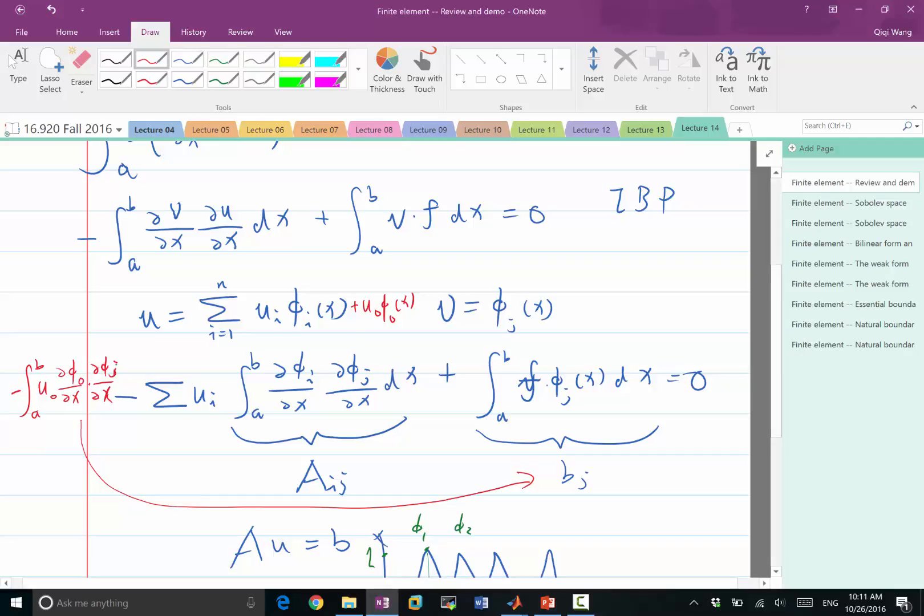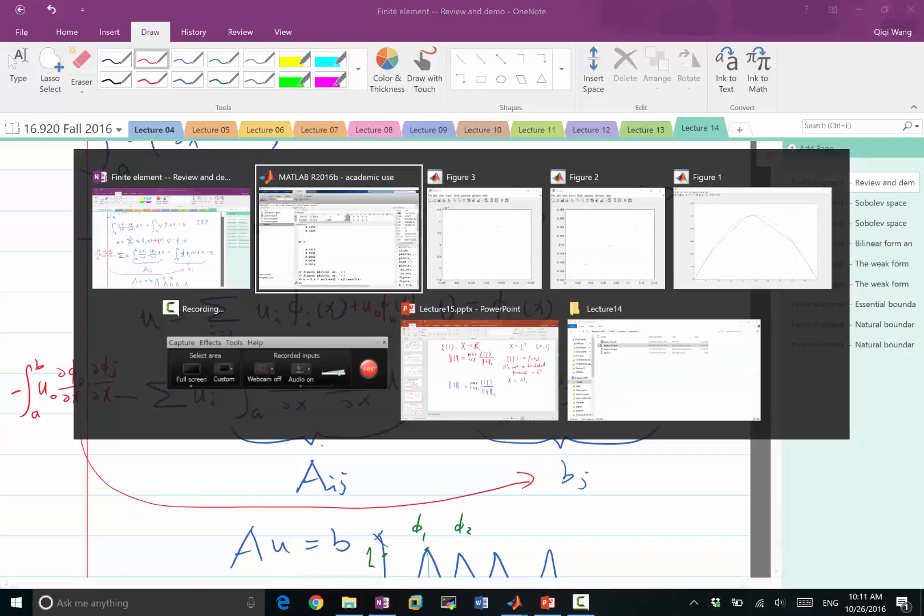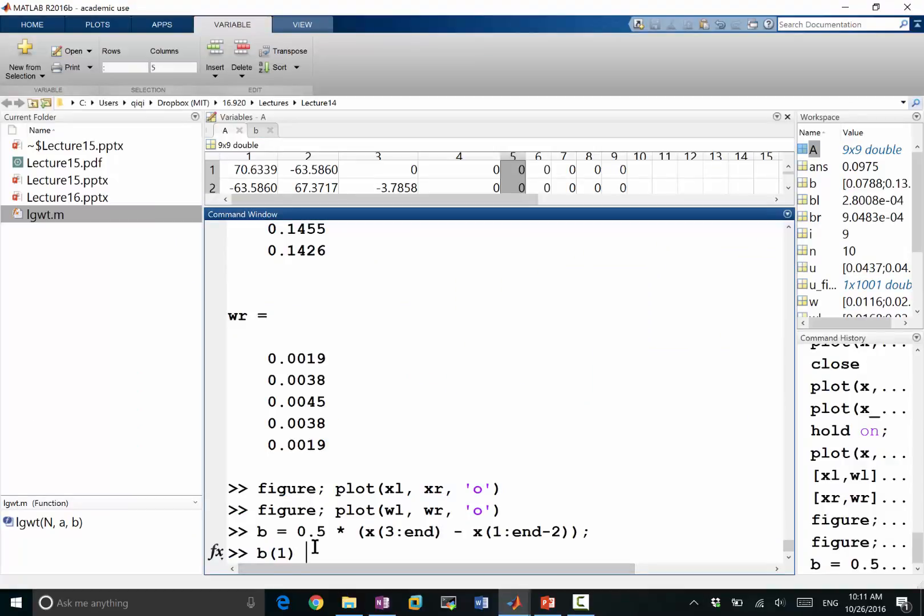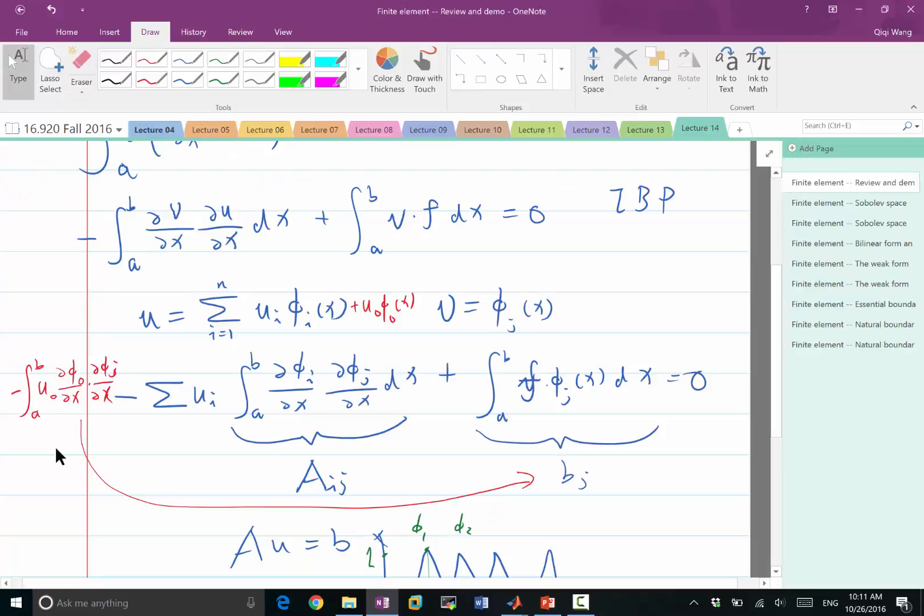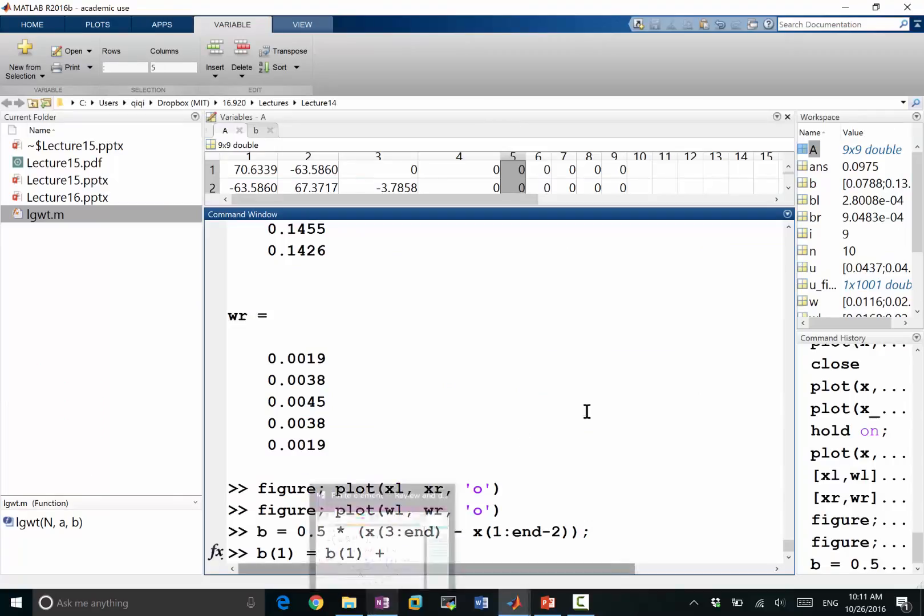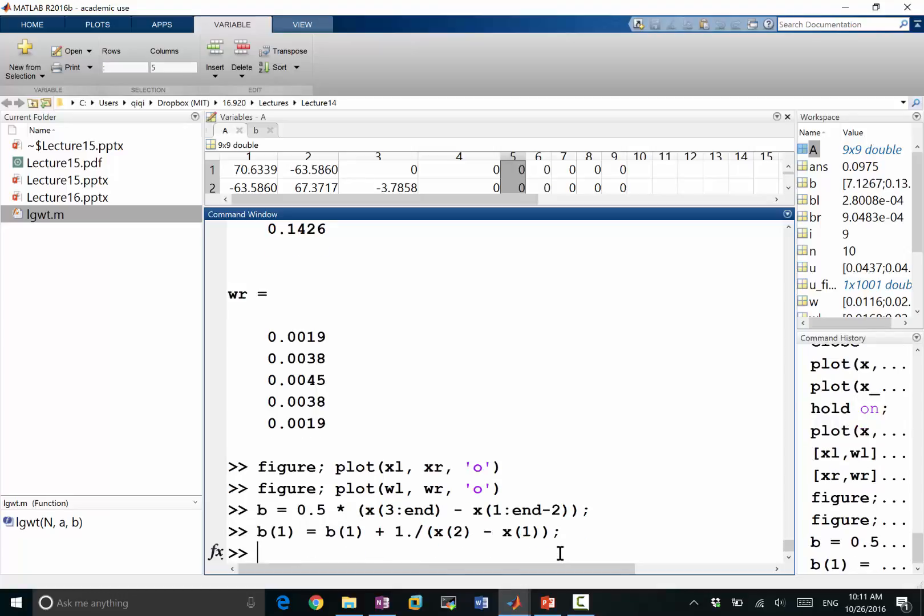So the value of this is the same as one of the terms in a_ij, right? So what we need to change is simply b1 is equal to b1 minus, well, this term itself is negative because d phi0 dx is negative, d phi_j dx is going to be positive, where j is equal to 1, so it's a downward slope plus an upward slope. So minus and minus cancels, we get an addition here, so it's going to be plus 1 over x2 minus x1, right?